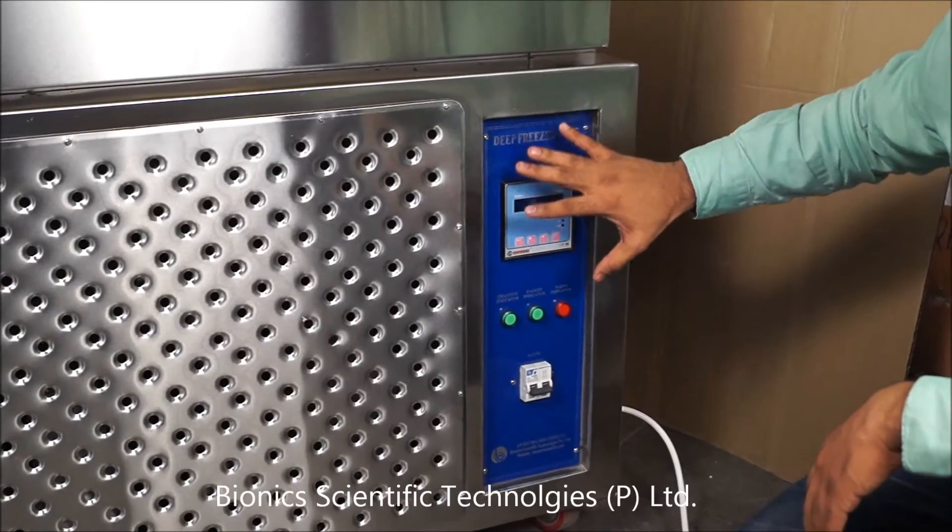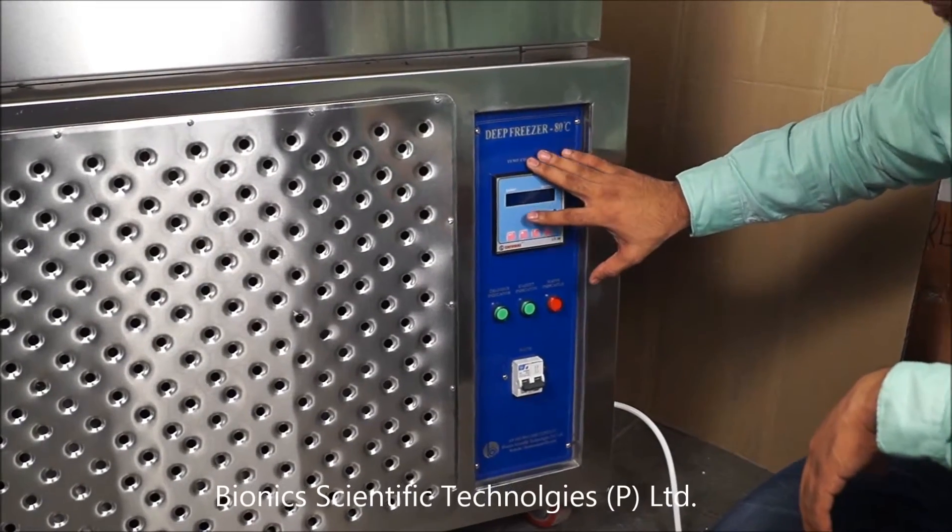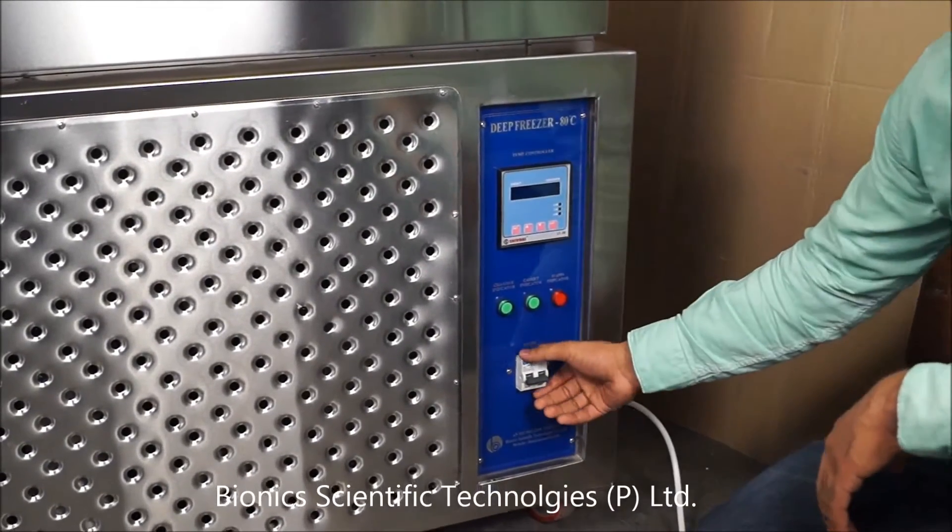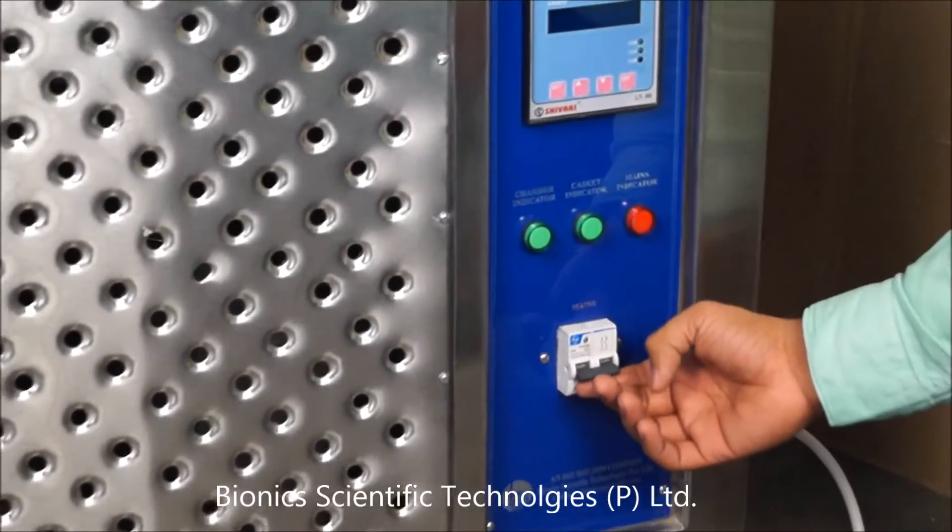This is the control panel of this laboratory deep freezer. This is the main MCB switch. You can turn it on like this.